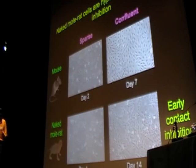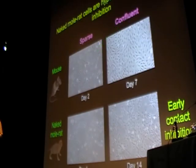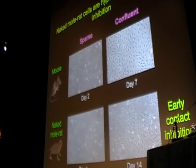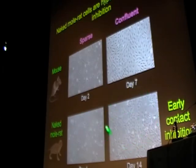If you look at cancer cells, most of them lose early contact inhibition — they grow on top of each other, pile up, and actually kill the cultures. But primary cells form a nice monolayer. When you isolate primary cells from naked mole-rats, they grow a bit slower than mouse cells, but there is a maximum cell density we can achieve on the plate. We call this stage early contact inhibition because there is much less cell density.